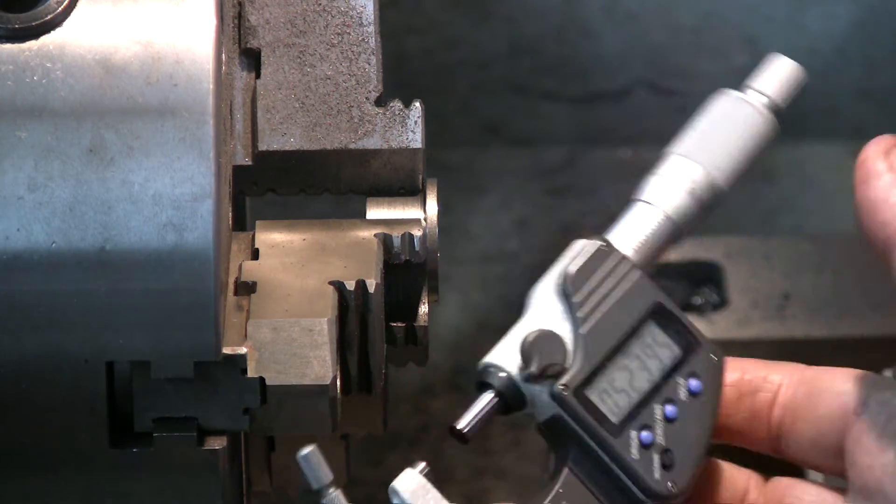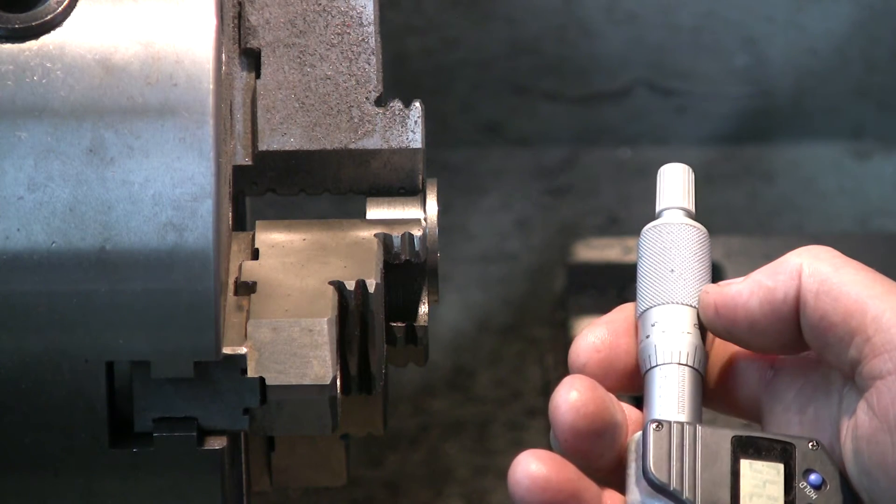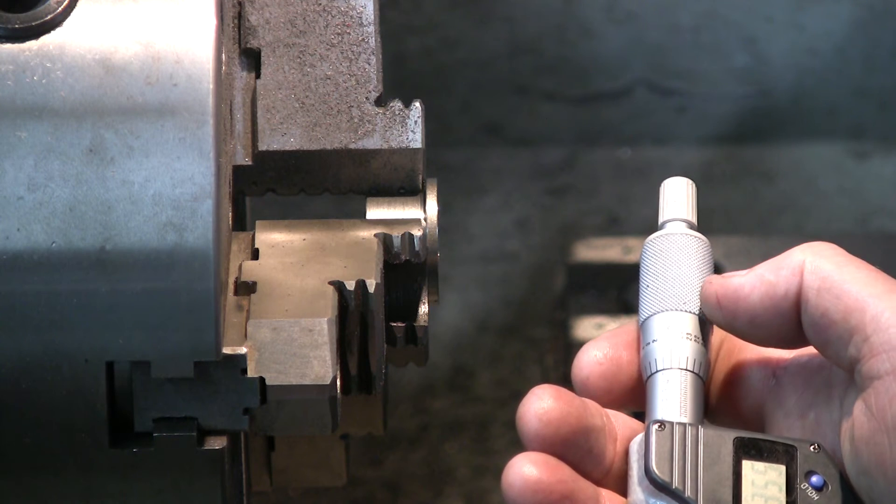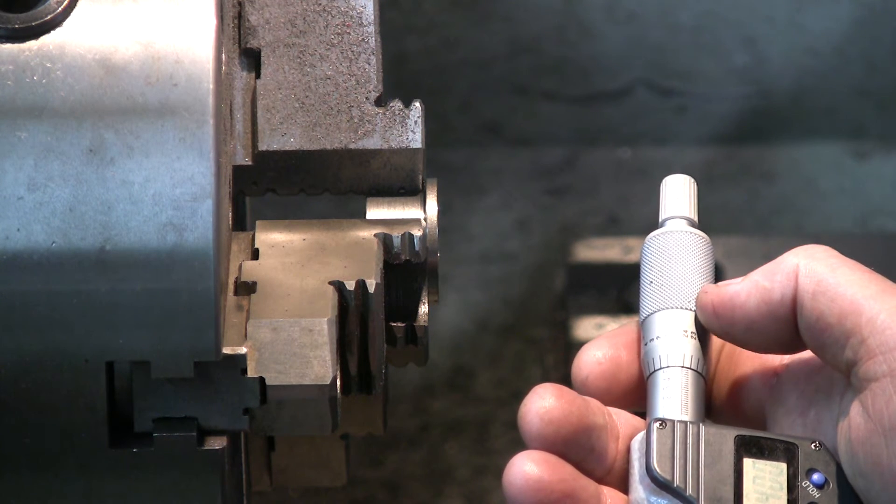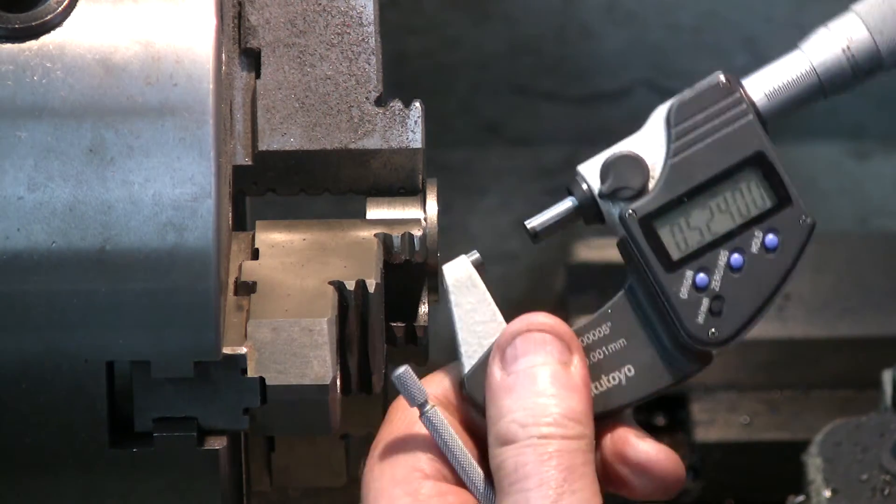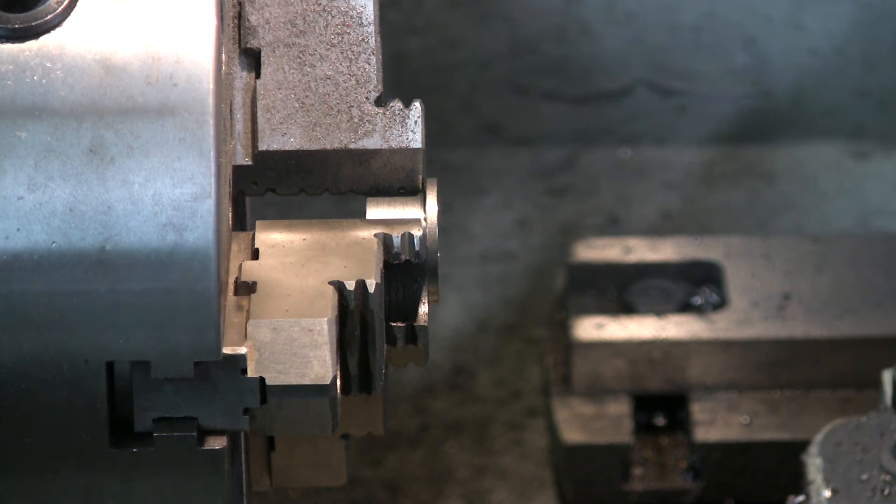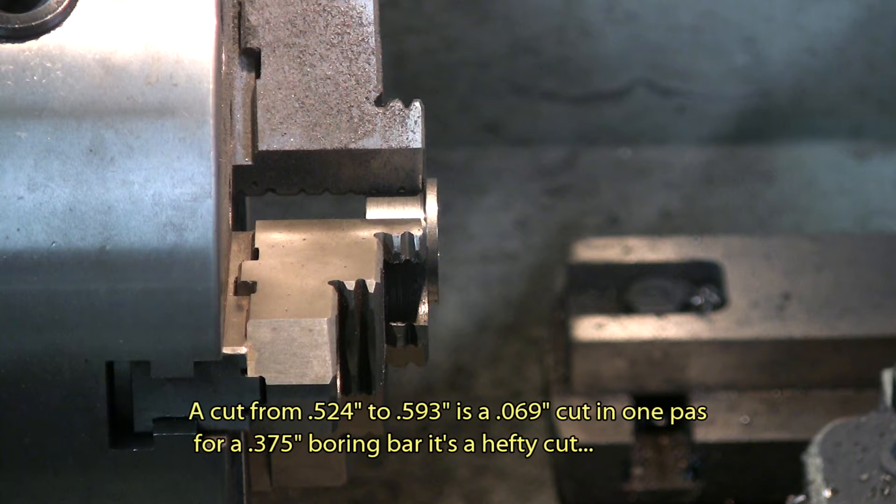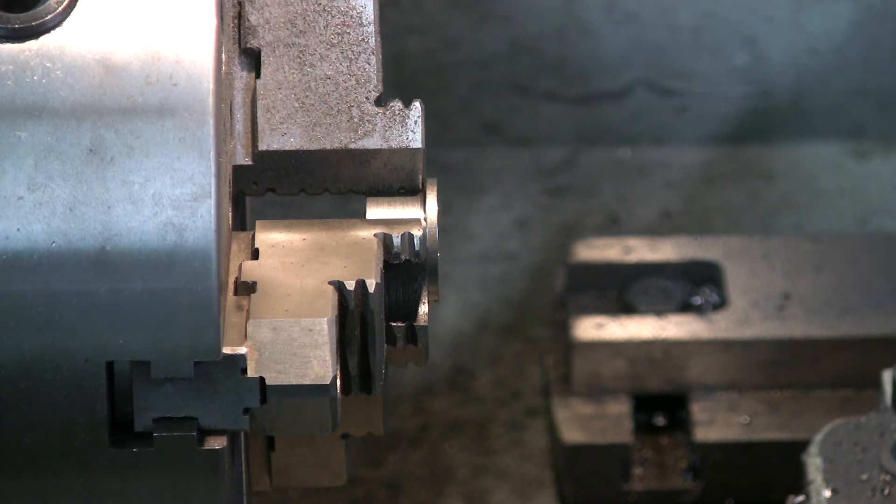Now I'm going to take another measurement. It's 524. So what I'm going to do is put my DRO at 524. I'm trying to get the final diameter I want, which is 590. Let's say 593. So I'm going to take a cut.